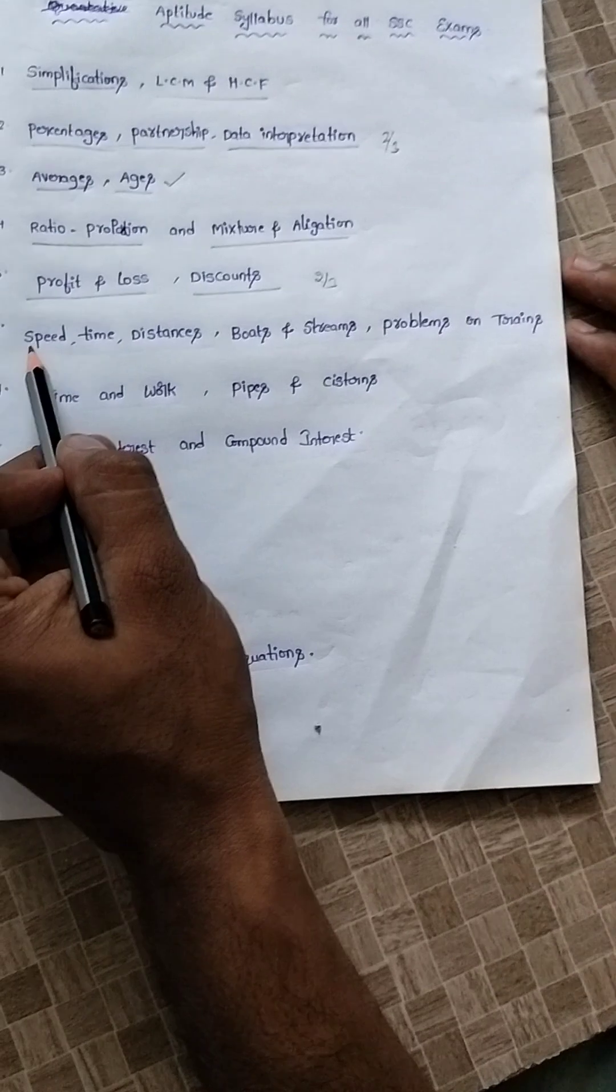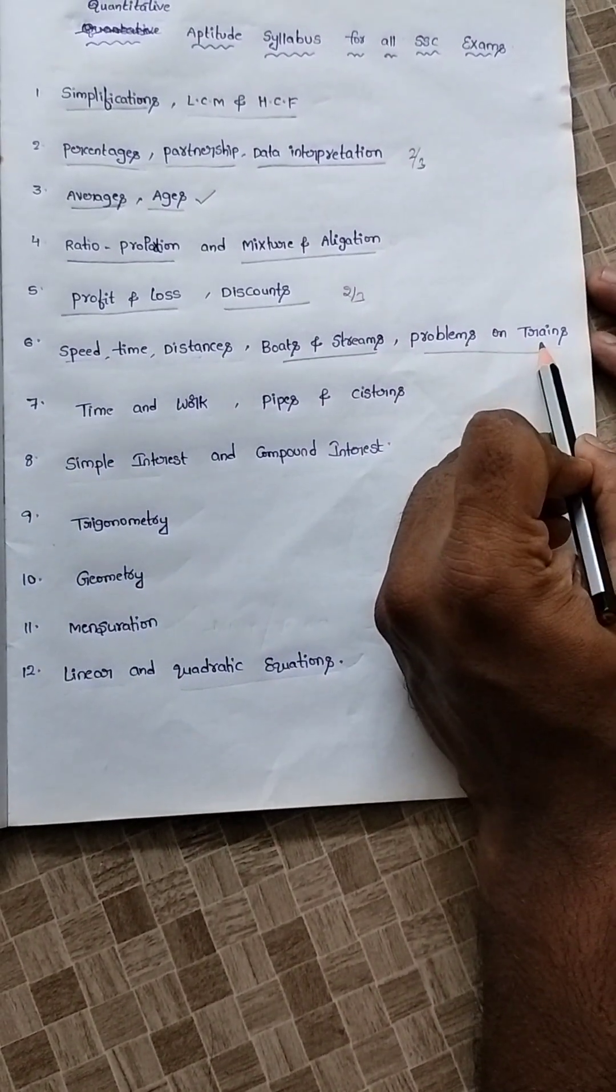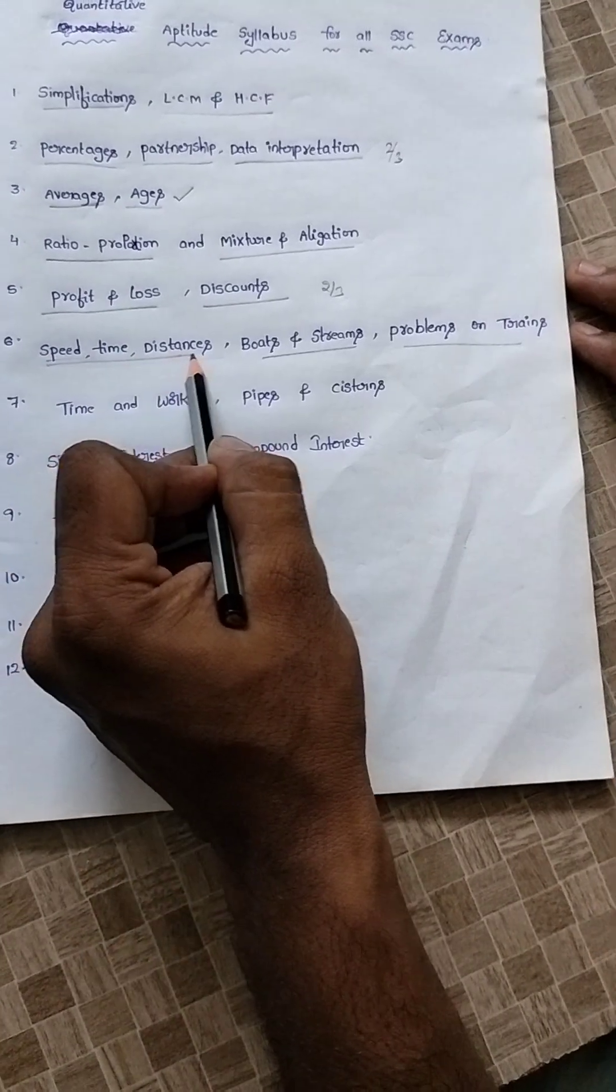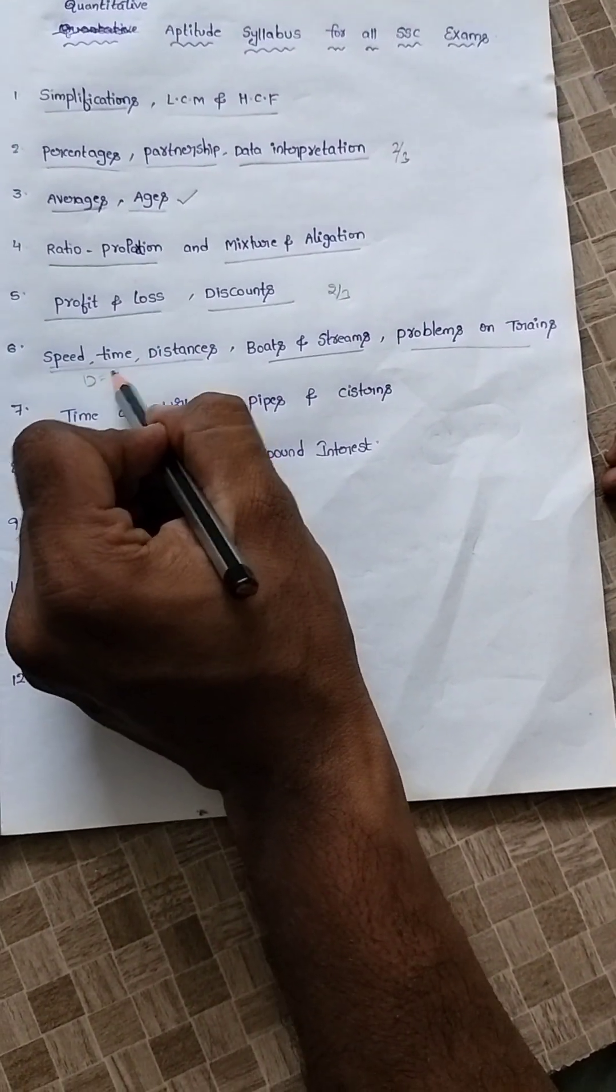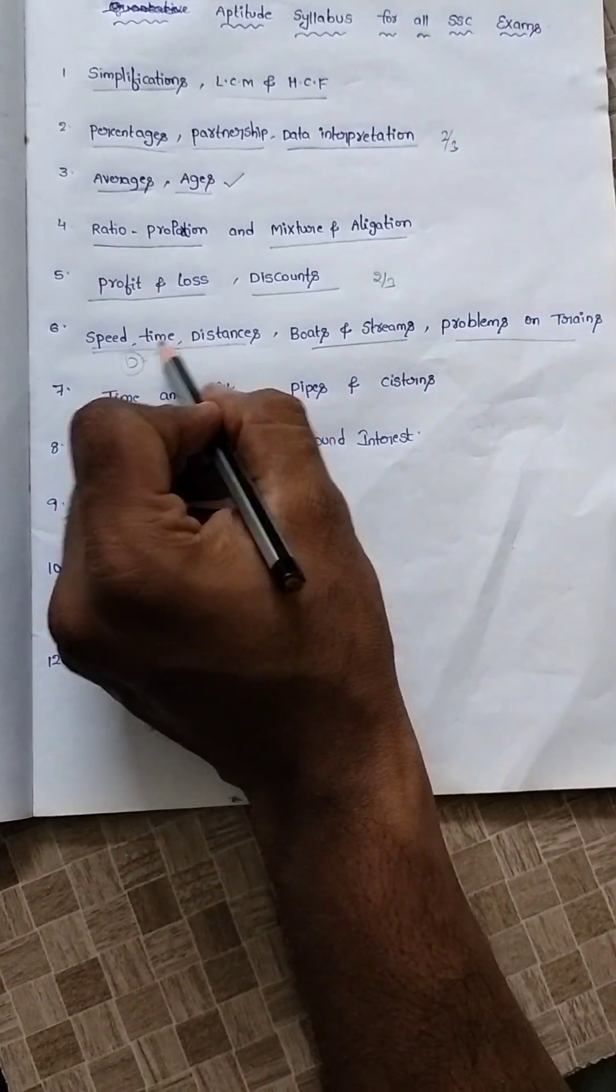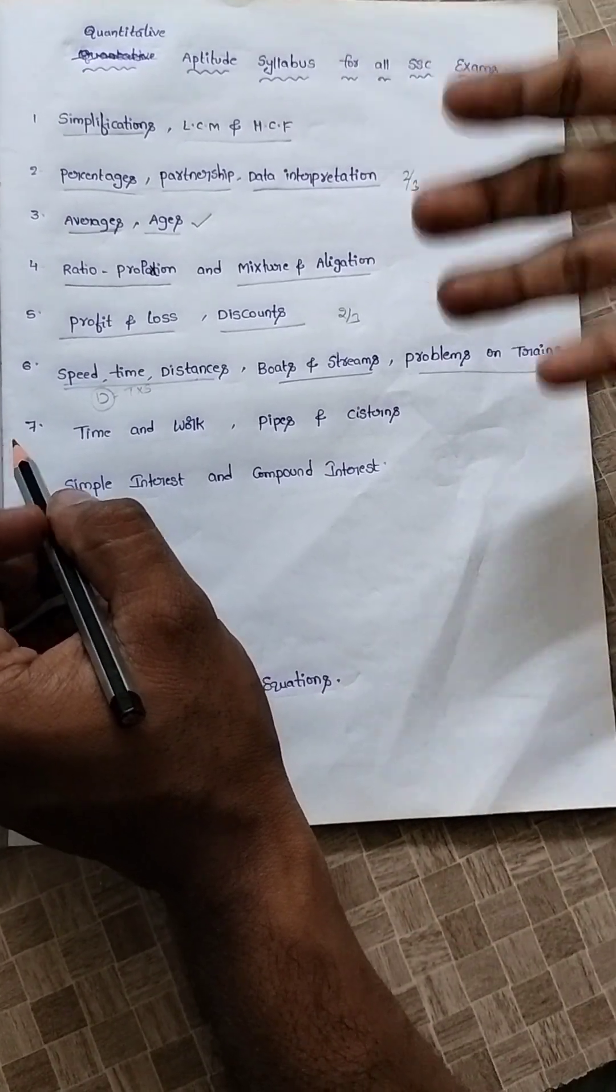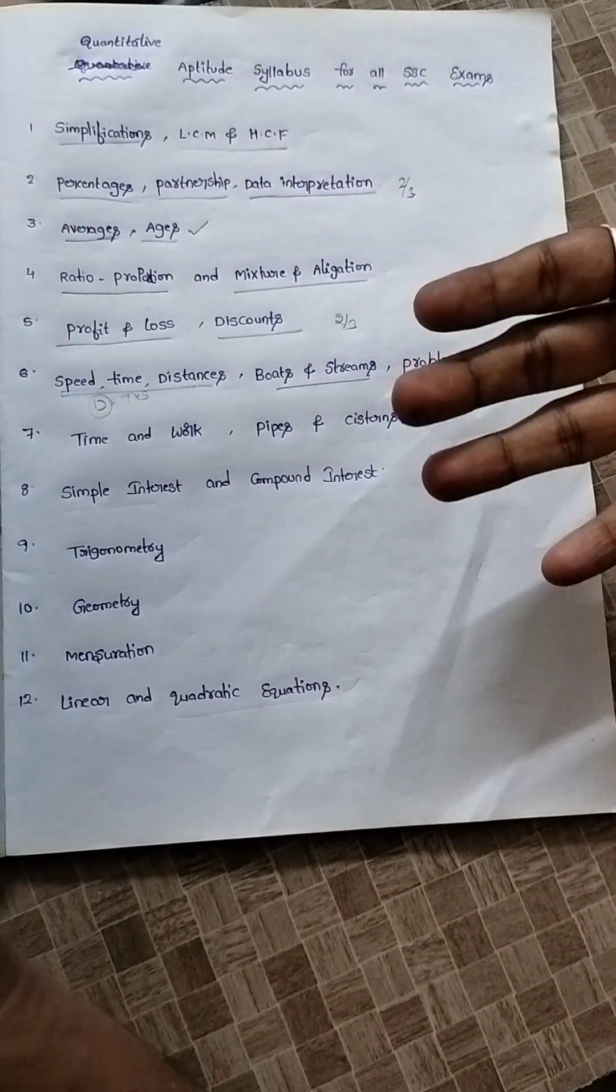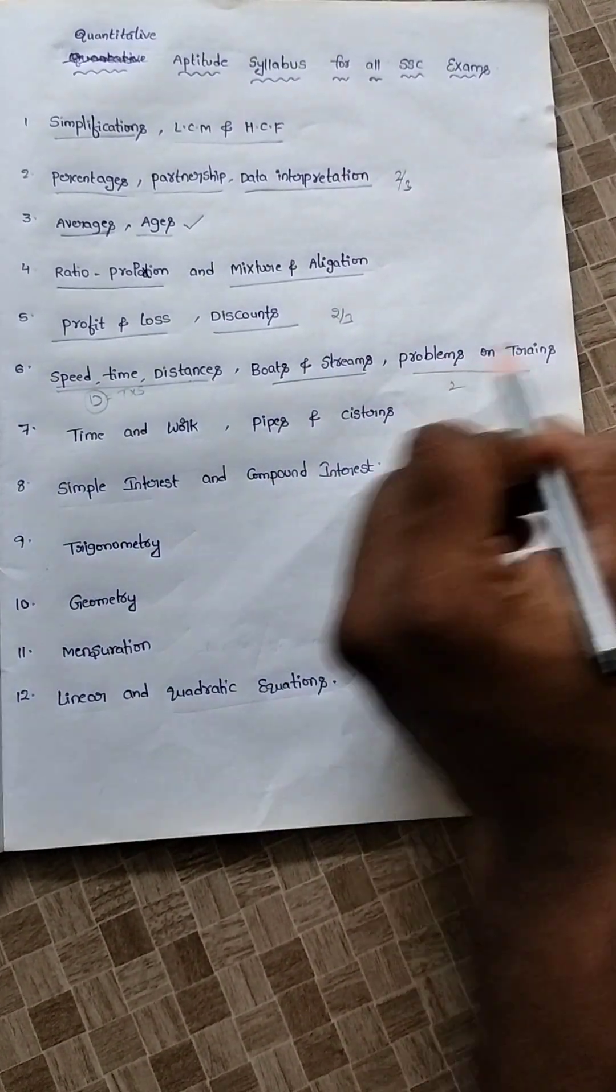Then speed, time, distance, and boats and streams, and problems on trains. If you are getting the basic principle, speed, time, distance like D=T×S, D equal to time into speed. Whatever parameter you want, the remaining two parameters he will give directly as well as indirectly. Just we have to know what parameter he has given.